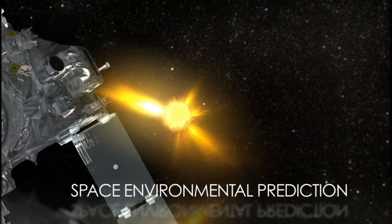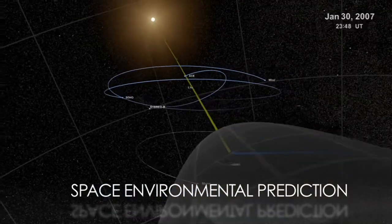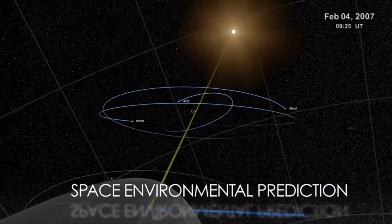In its study of heliophysics, NASA uses a fleet of satellites to take an unprecedented look at the Sun and how it affects us here on Earth.